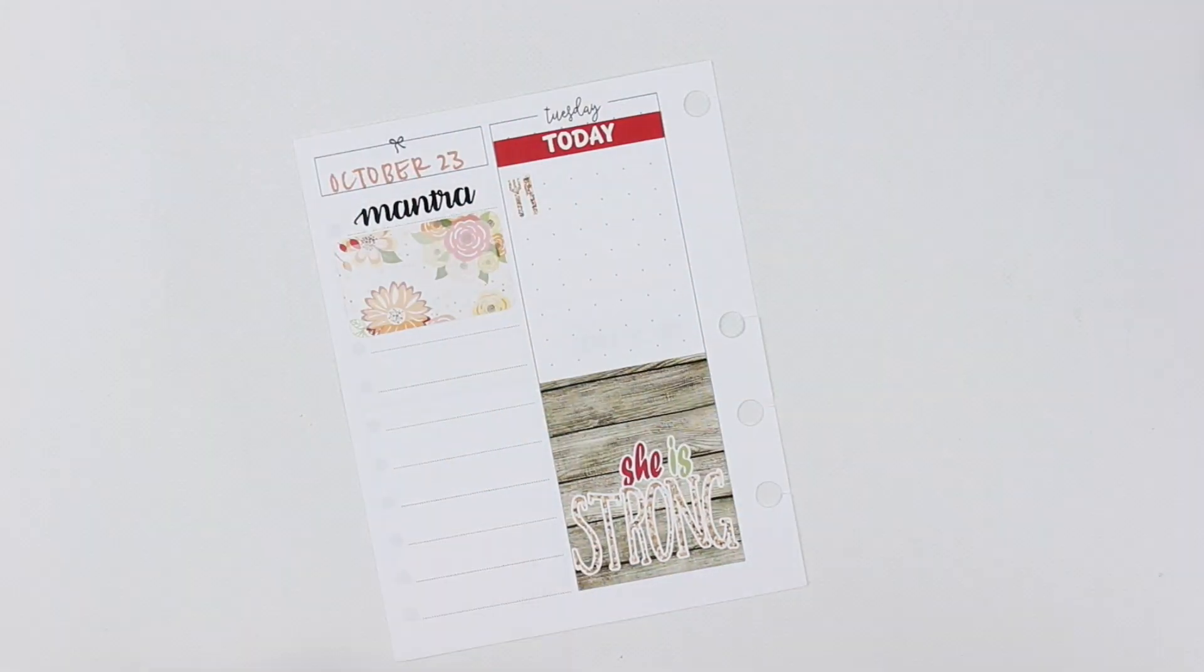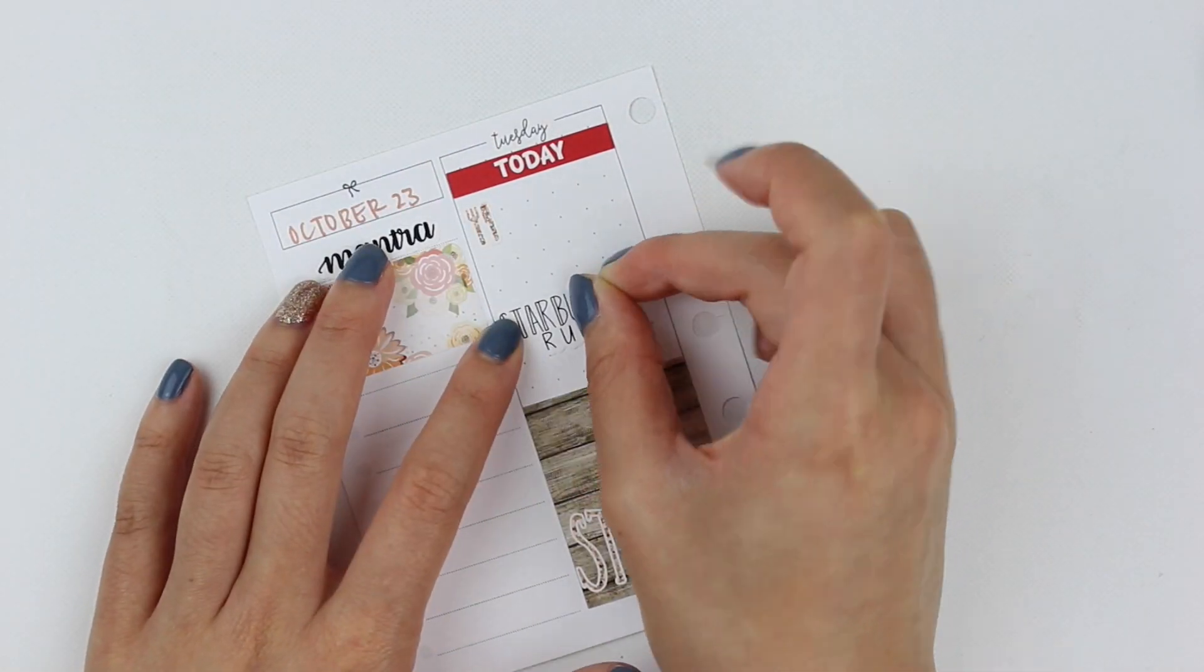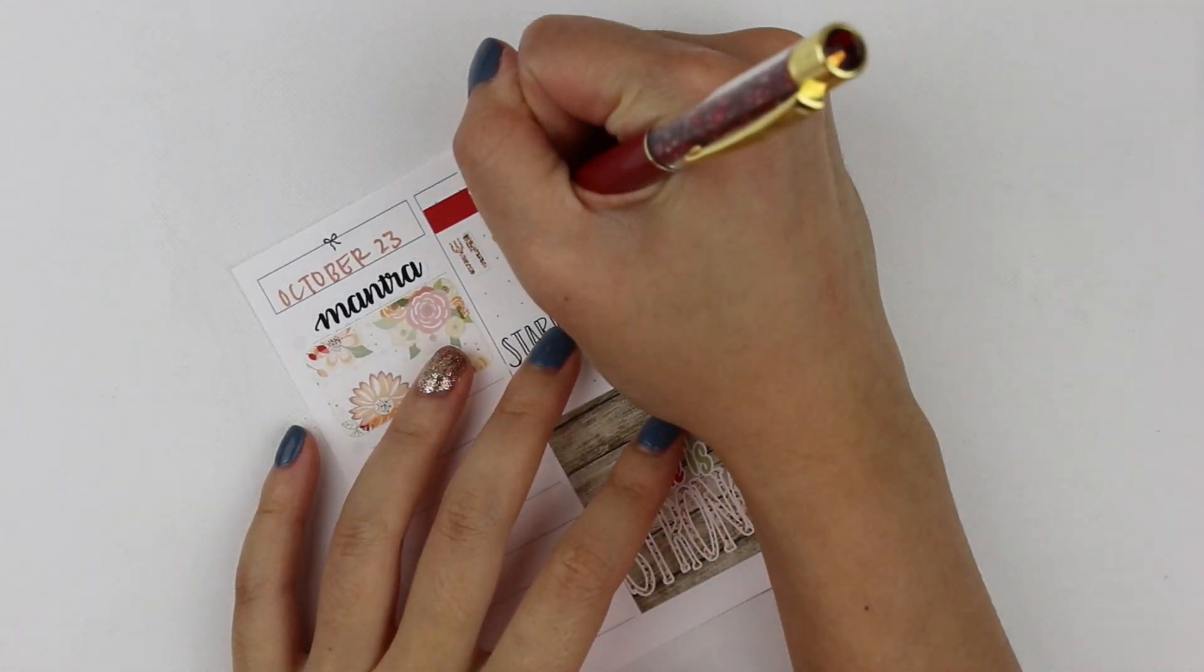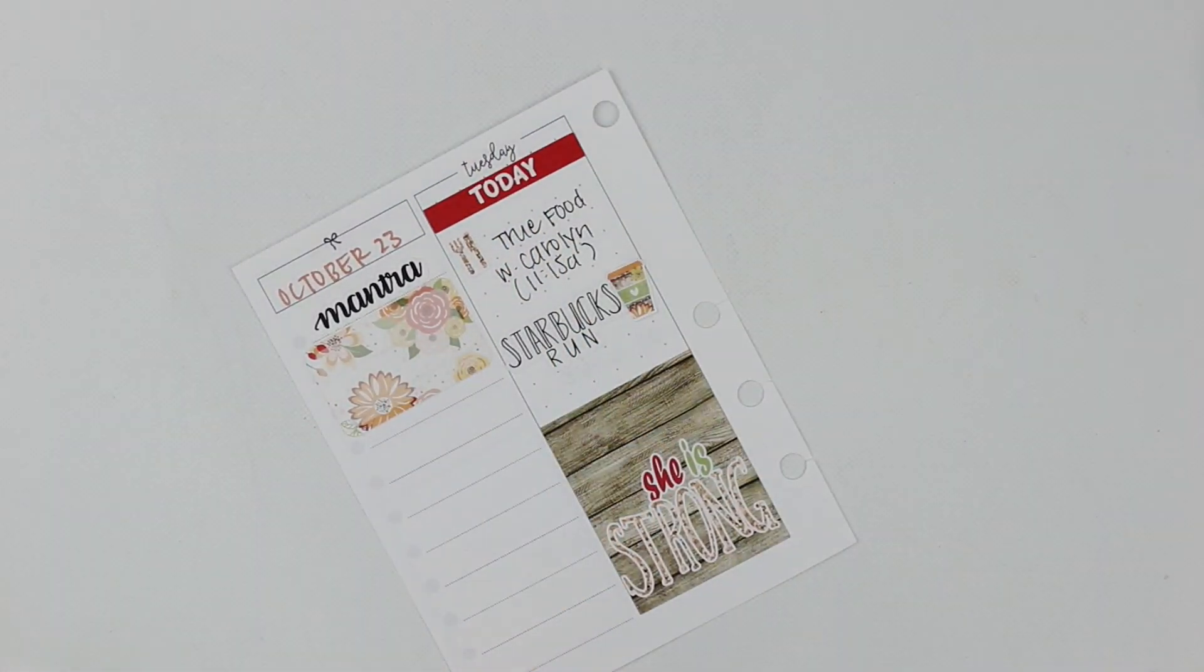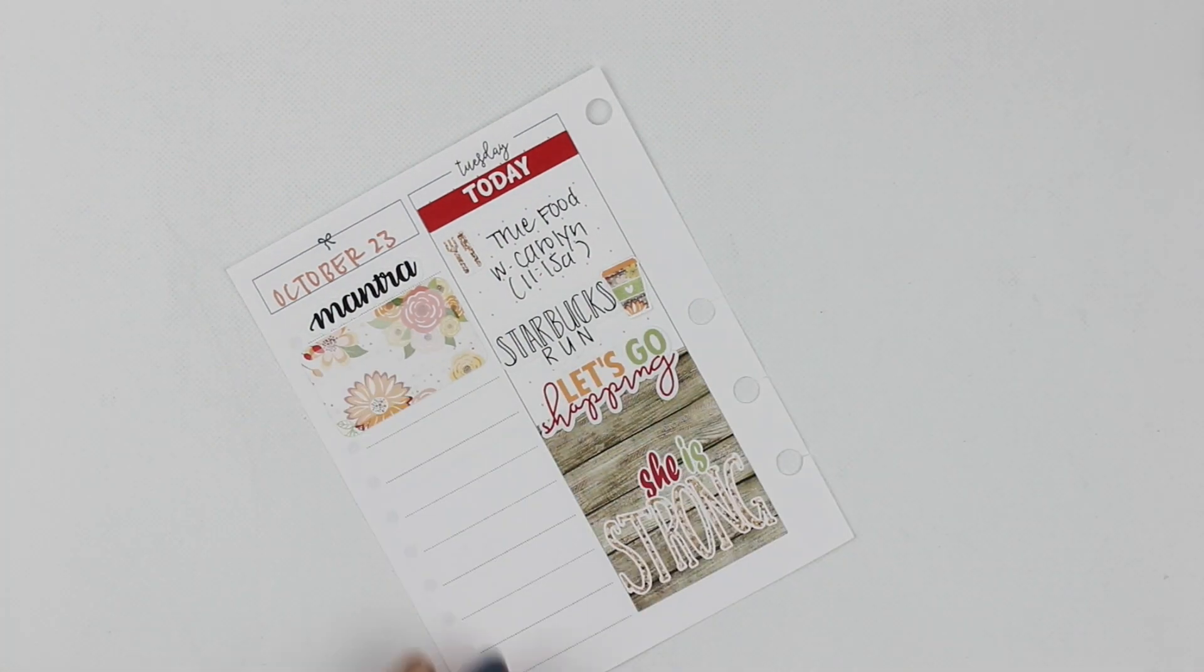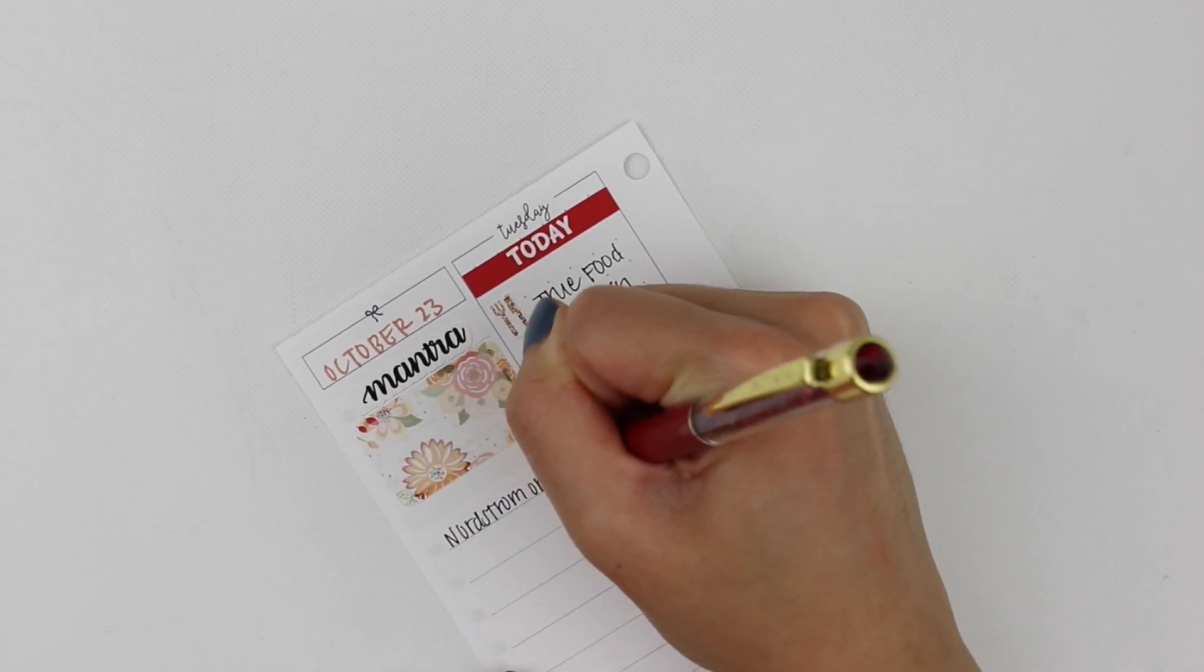On to Tuesday, I put down a today header. Carolyn and I, Carolyn from Carolyn Plans, we had lunch plans that day, so that was really exciting. I knew that I wanted to stop by Starbucks afterwards because it was right across from the restaurant. The Starbucks run is from J.Crew Plans.